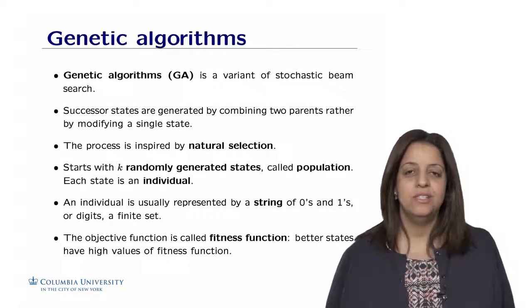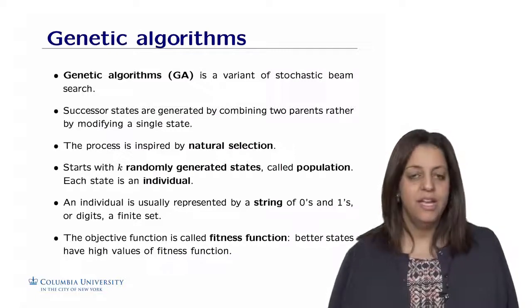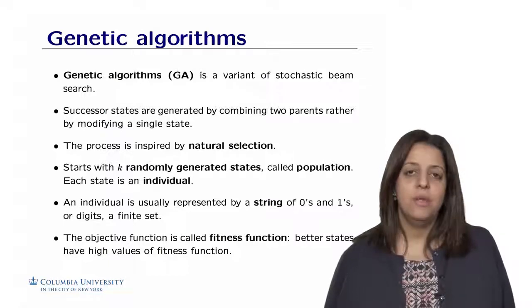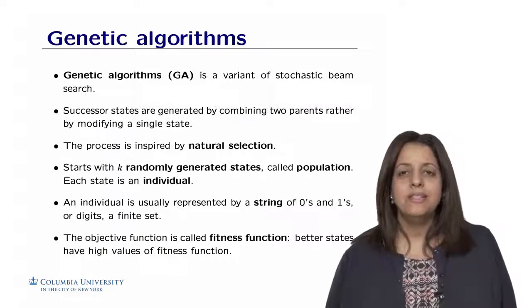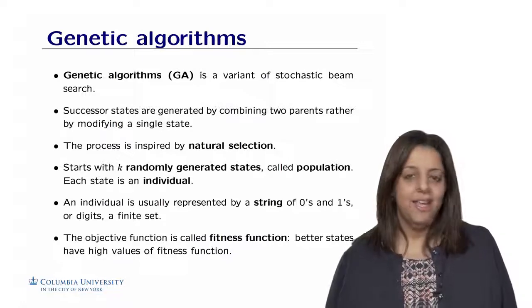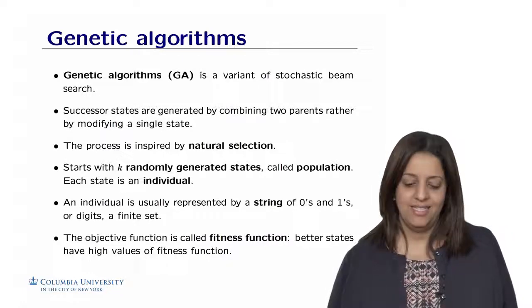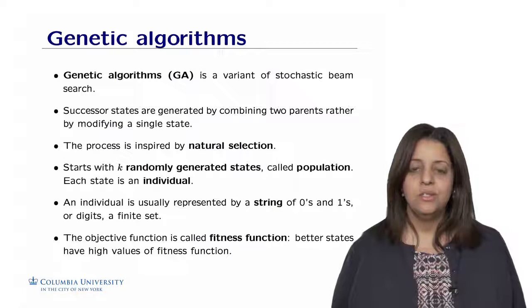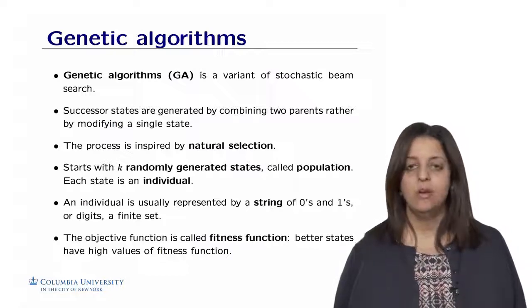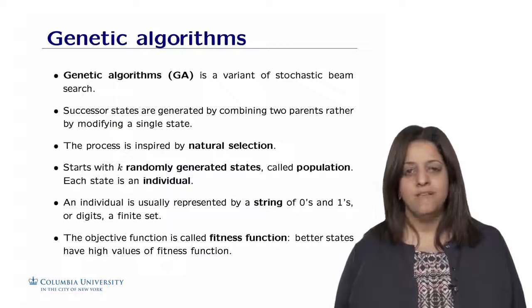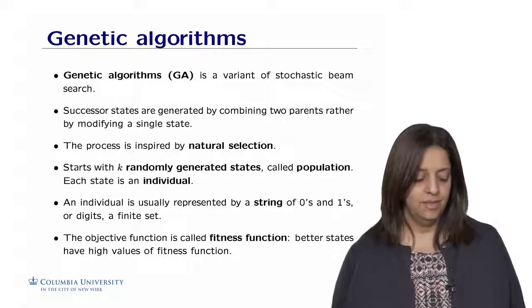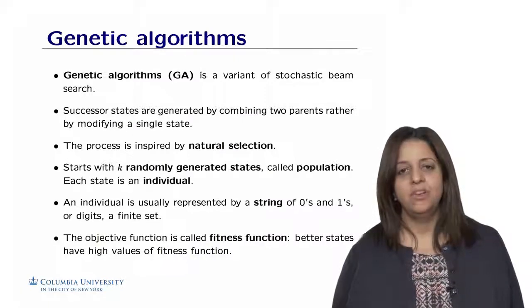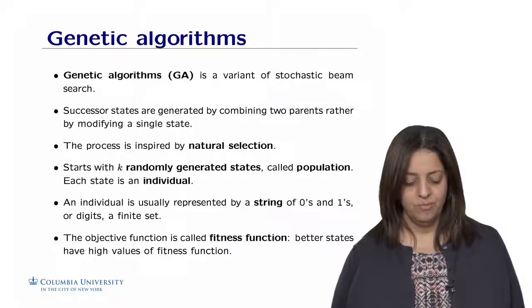Now, how about genetic algorithms? Genetic algorithms is a variant of stochastic beam search algorithms, in which successor states are generated by combining two parents rather than by modifying a single state. The process is heavily inspired by natural selection, in which we start with k randomly generated states, called population. Each element in the population is called individual. An individual is usually represented by a string of zeros and ones, or by a string of digits, in general by a finite set of elements. The objective function is called fitness function, in which better states have a better fitness or better objective function, or high values as compared to the other states.